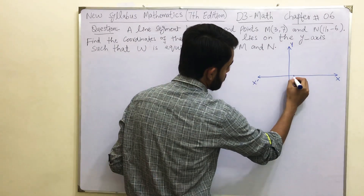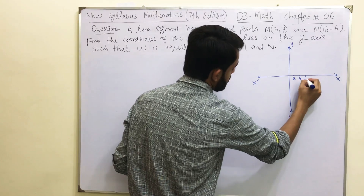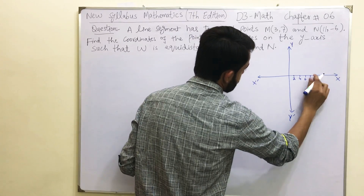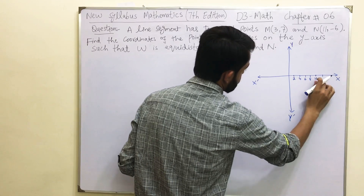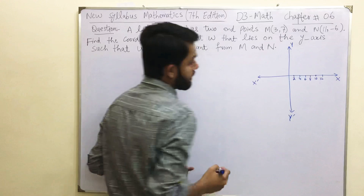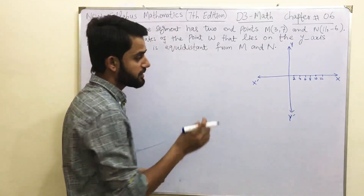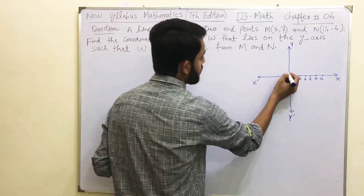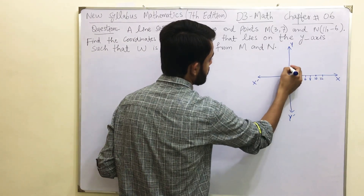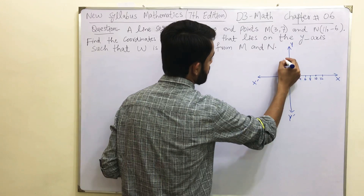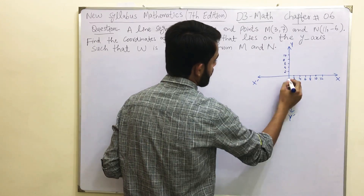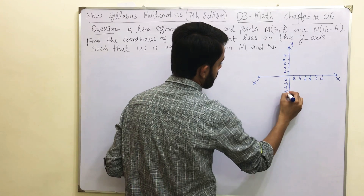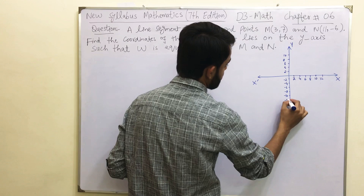We are going to mark the x-axis at intervals of 2, 4, 6, 8, 10, and 12. Make sure that on graph paper the distance between every two points is the same. We also mark the y-axis at 2, 4, 6, 8, 10 and the negative y-axis at minus 2, minus 4, minus 6, minus 8, minus 10, minus 12.